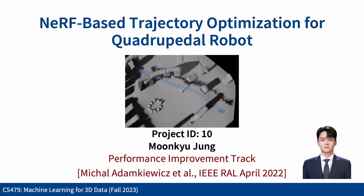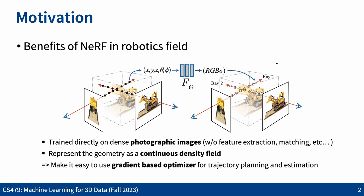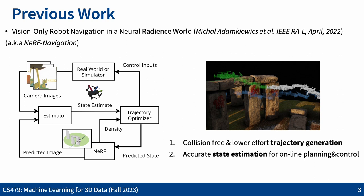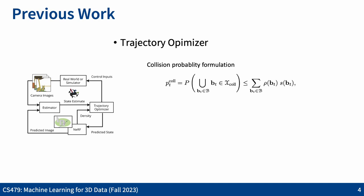Hello, this is Team 10. Our course project is NeRF-based trajectory optimization for Quadruped robots. NeRF is trained directly on dense photographic images and represents geometry as a continuous density field, making it easy to use gradient-based optimizers. Our baseline, NeRF Navigation, makes collision-free trajectories for quadrotors using density from NeRF, approximating the robot body with a bounding box. The probability of terminating a ray from NeRF serves as a proxy for collision probability, and the trajectory optimizer makes waypoints minimizing a multi-objective cost including collision penalty.